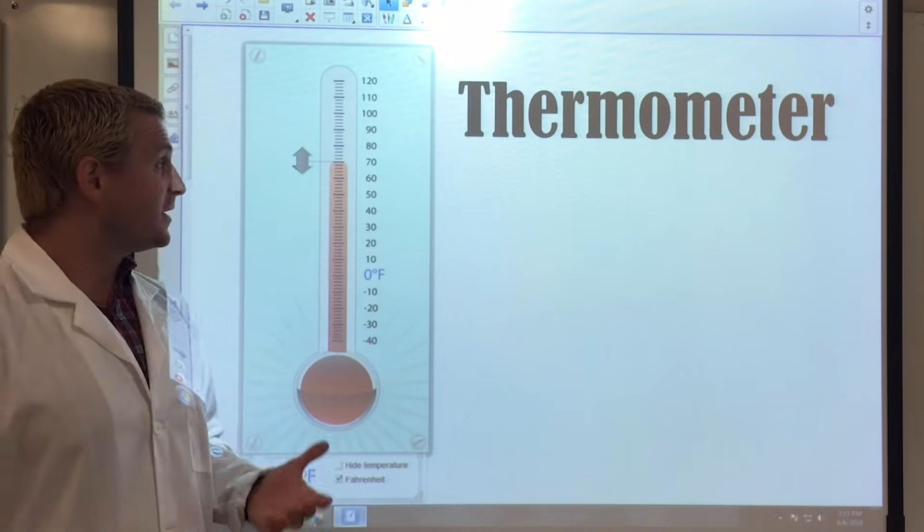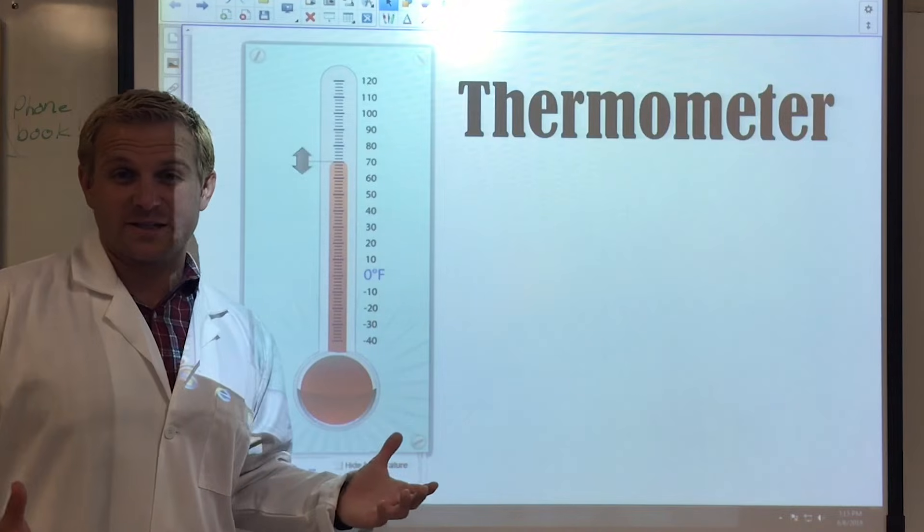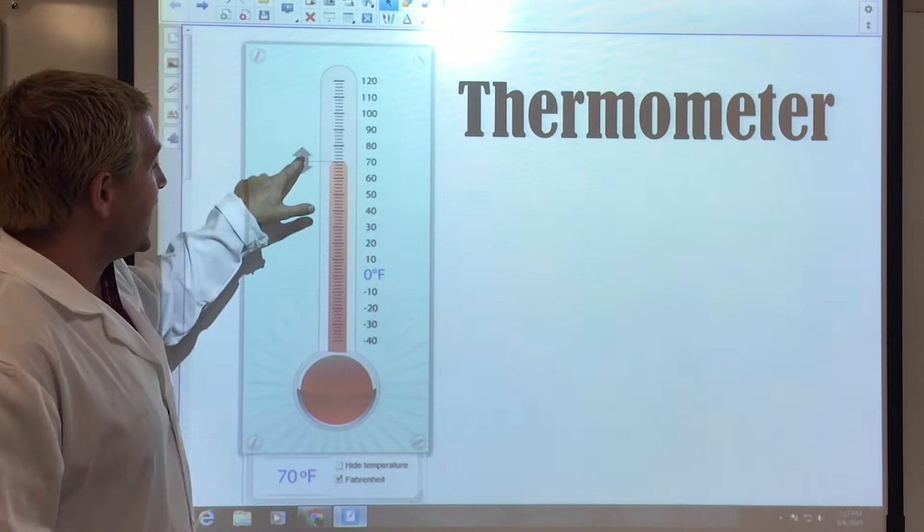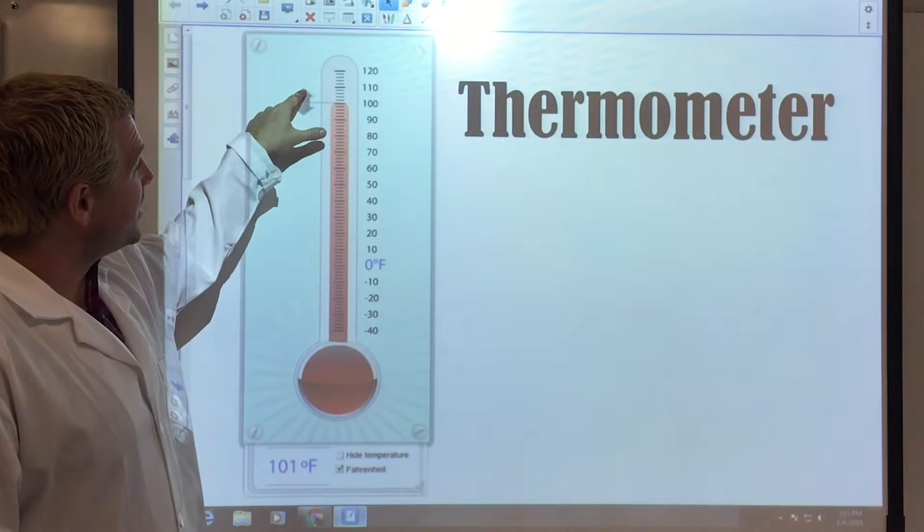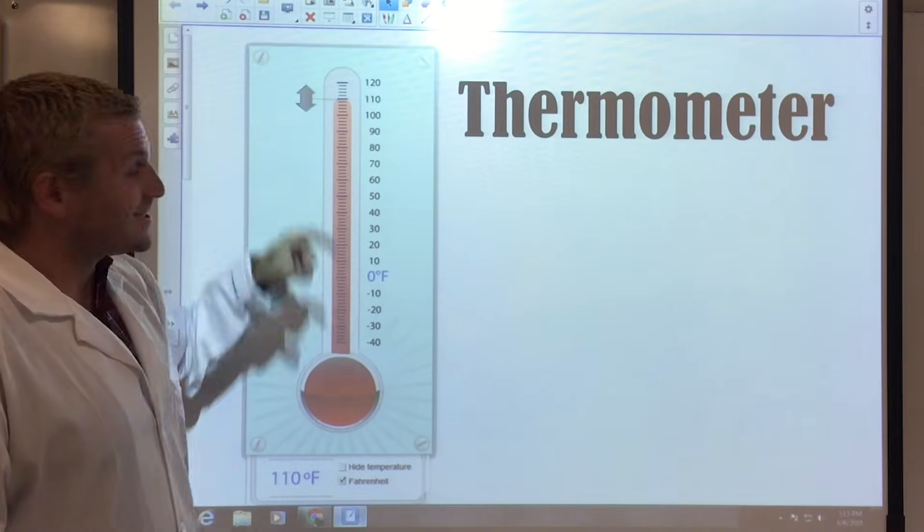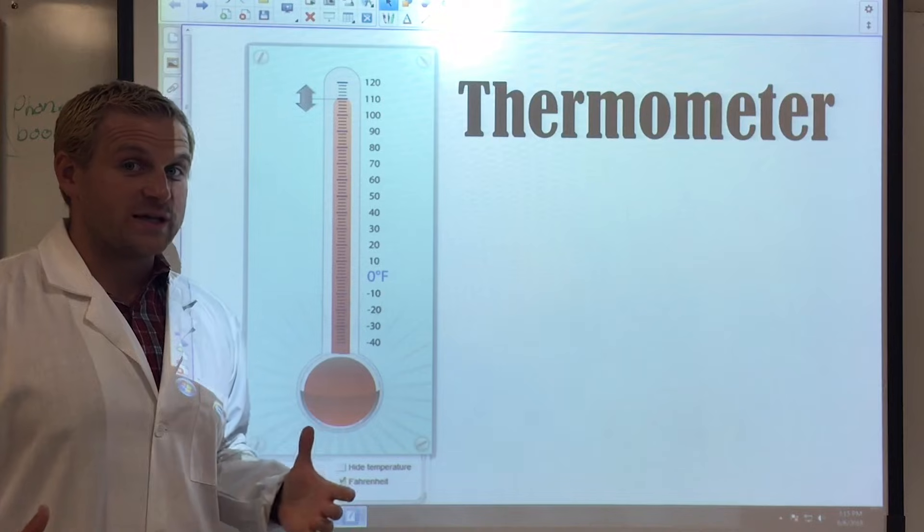On a hot summer day, depending on where you live, maybe let's say you're down in Texas or Mexico, a hot summer day might get all the way up to 100, maybe 110 degrees. That's really, really hot.